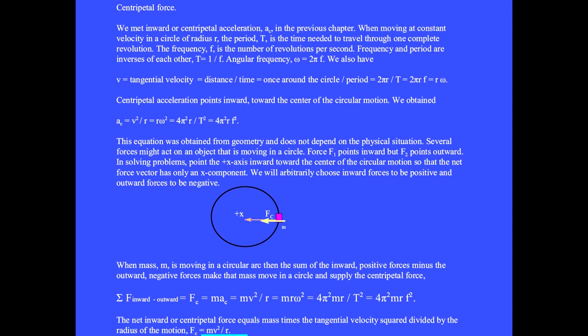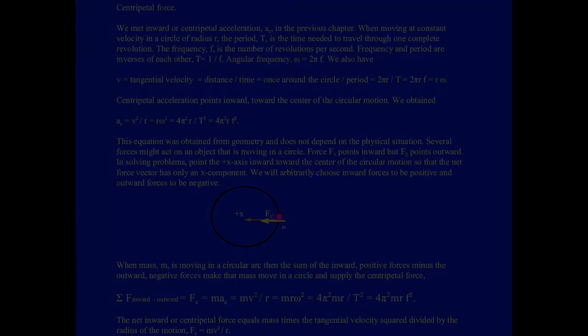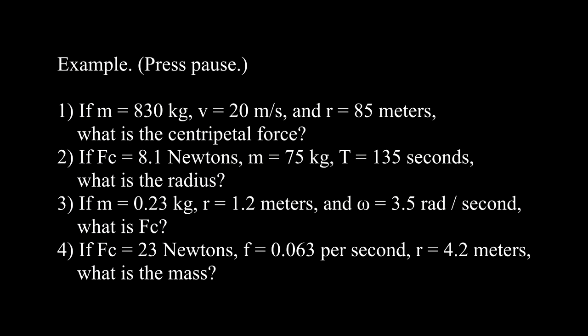We usually state it as FC equals mV²/R. Please press pause to make these four calculations. In problem one, a small car is driving around in a circle. In problem two, a person is running around a track.